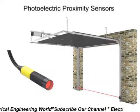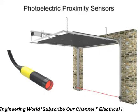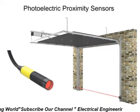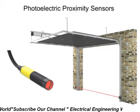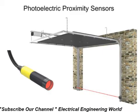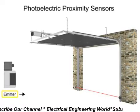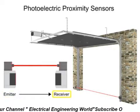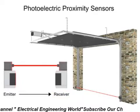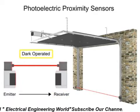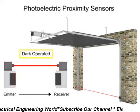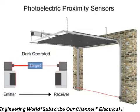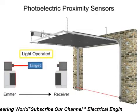Photoelectric sensors have the greatest detection range, from 1 mm to 25 meters or more. They operate by the use of an emitter, which transmits a beam of light to the receiver. When the light is normally being received, it is known as dark-operated mode. When the absence of light is required, it is known as light-operated mode.